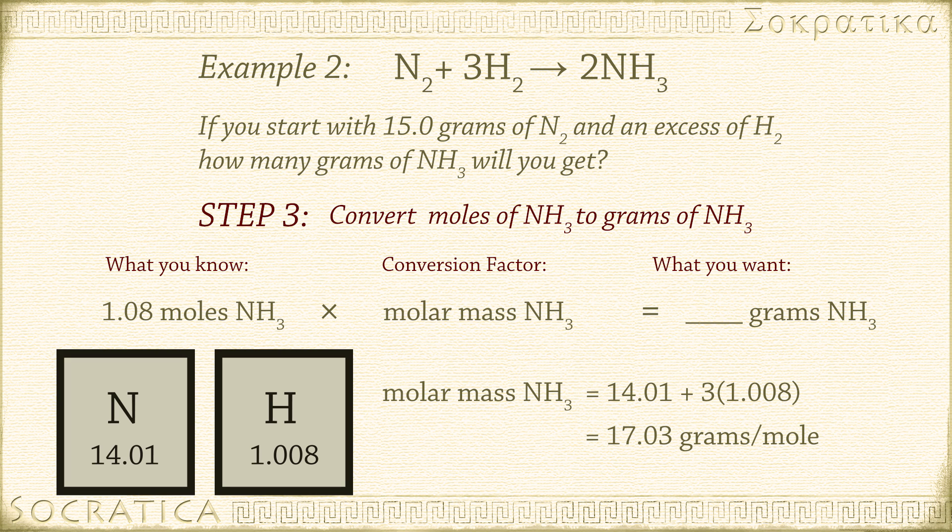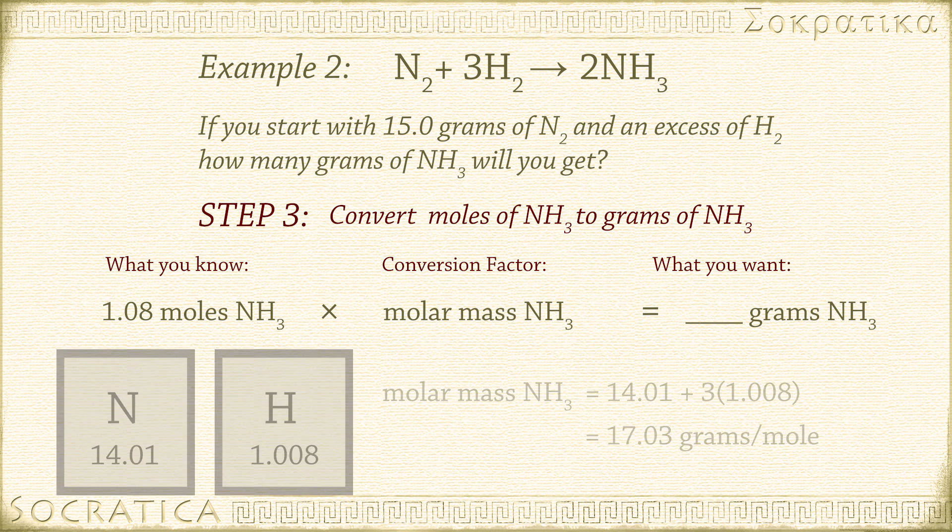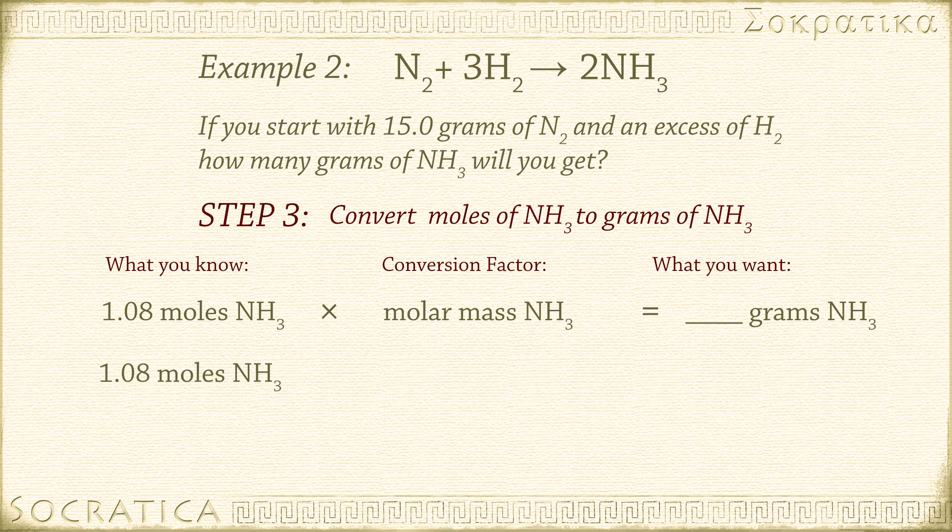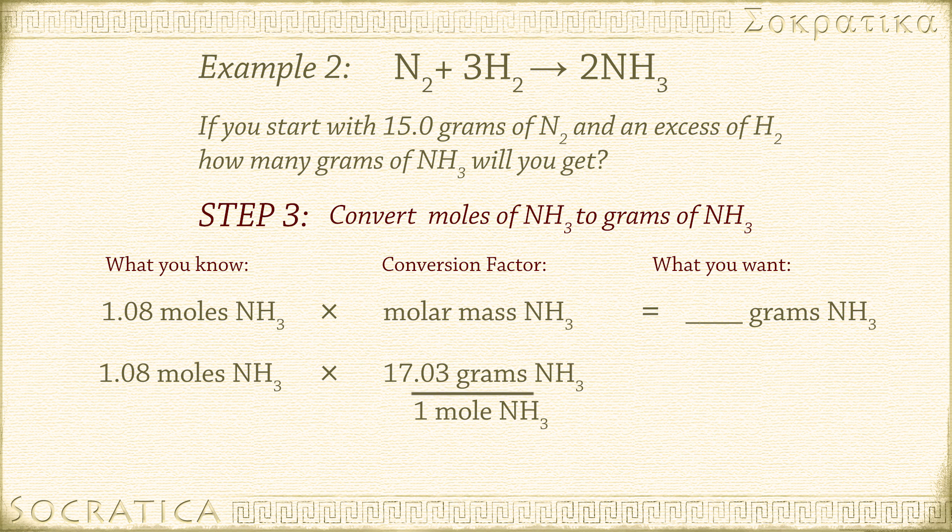As always, make sure the conversion factor is in the right orientation so the units cancel. 1.08 moles of NH3 times 17.03 grams per mole. Moles cancel. Gives us 1.08 times 17.03 equals 18.4 grams of NH3.